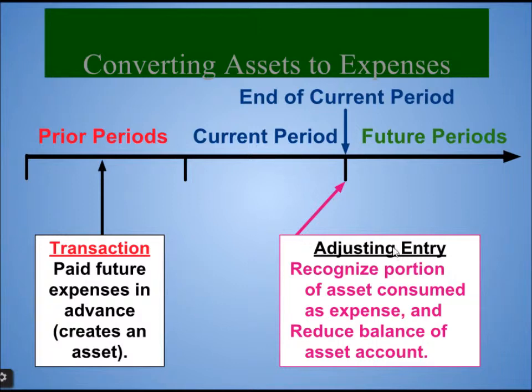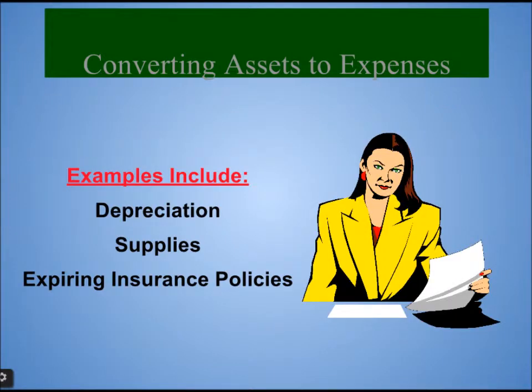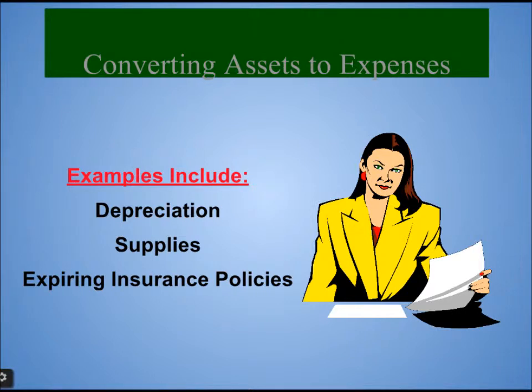So what you do is reduce the asset amount and turn it into an expense. Examples of converting asset to expenses include depreciation — if you buy furniture, every day the value decreases, which is called depreciation. In the case of supplies, when you use paper or pencil, it is no longer an asset; it becomes an expense. Expiring insurance policies also become an expense when the period passes.